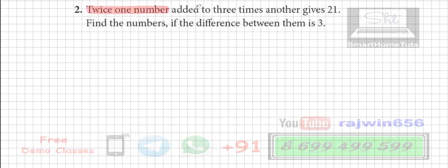Okay, twice one number added to three times another gives 21. Find the numbers if the difference between them is 3.